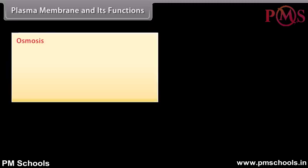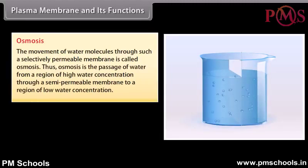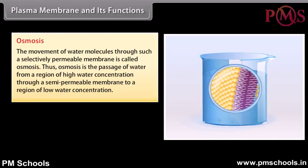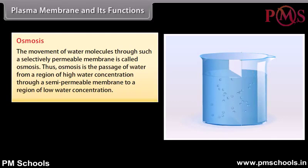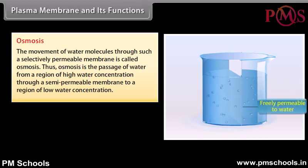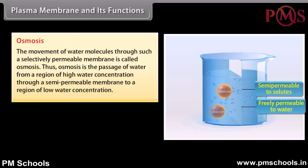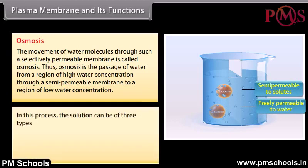The movement of water molecules through a selectively permeable membrane is called osmosis. Osmosis is the passage of water from a region of high water concentration through a semi-permeable membrane to a region of low water concentration. In this process, the solution can be of three types: hypertonic, isotonic, or hypotonic.